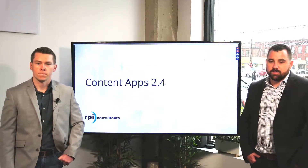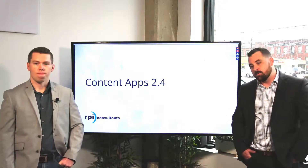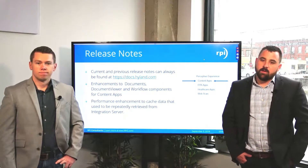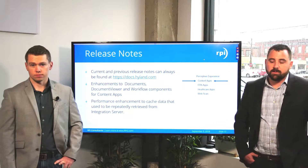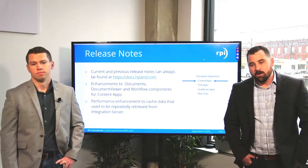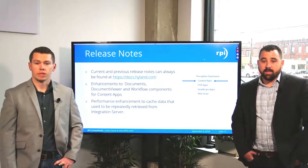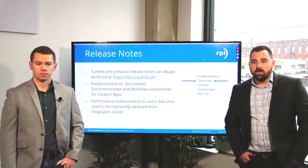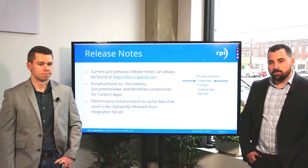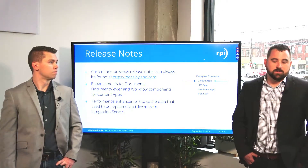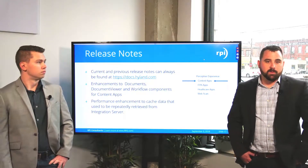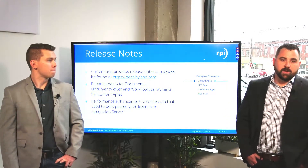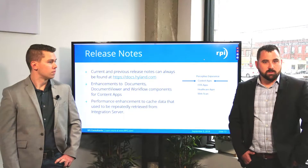Now we're going to talk about updates to Perceptive Experience Content Apps version 2.4. This was released alongside ImageNow 7.2.3. Most information can be found in the release notes on docs.hyland.com under Perceptive Experience Content Apps. The enhancements are to the different modules within Content Apps: the documents module, document viewer, and workflow components. There are also some UI enhancements and performance improvements based on the way they're caching data for frequently used calls — things like drawers and user security. If those are changed, you'd have to relaunch the client to refresh those values.